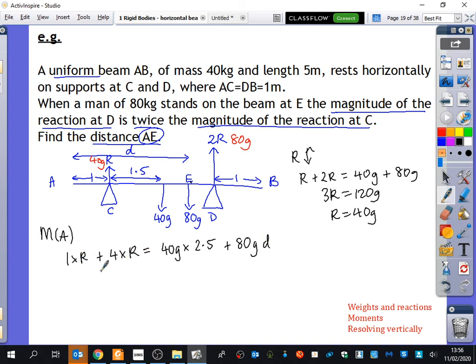So we've got 1R plus 4R, which is 5R, and R is 40G. So we've got 5 times 40G equals 100G. Oh, thank you. Sorry, sorry, sorry. So it's, the distance is 4 from here to here, and the size is 2R. So it's 4 times 2R. So that's 8R plus R, which is 9R. And then we've got 100G plus 80G, D. 9 times R is 9 times this, which is 360G equals 100G plus 80G, D.